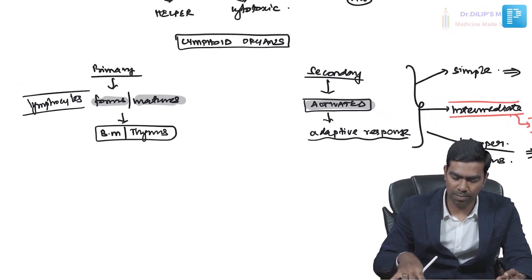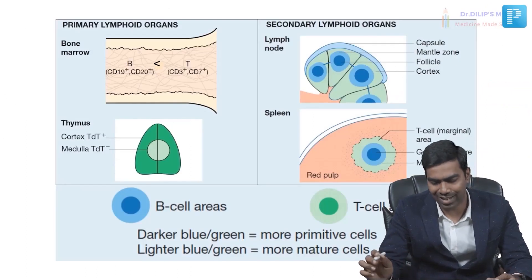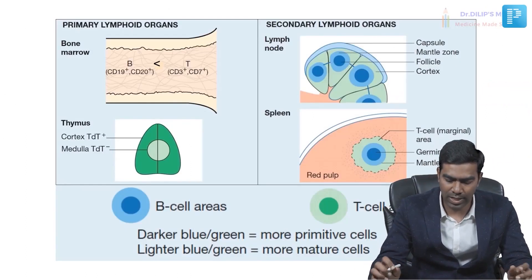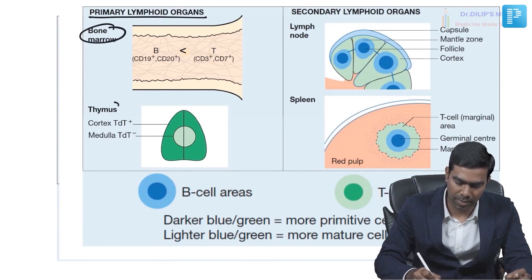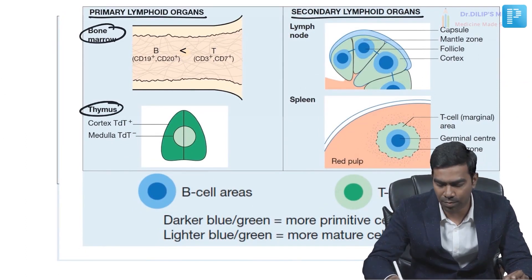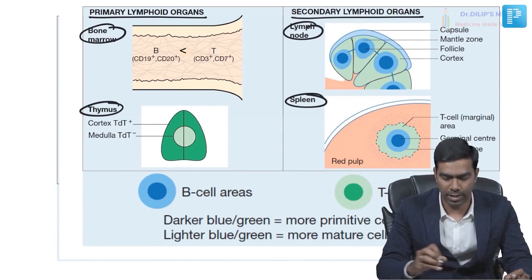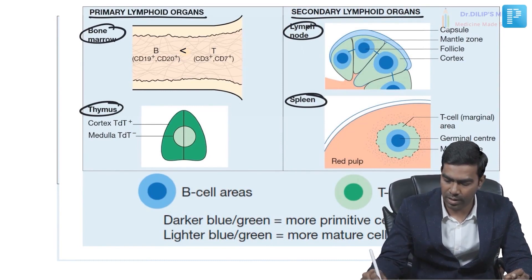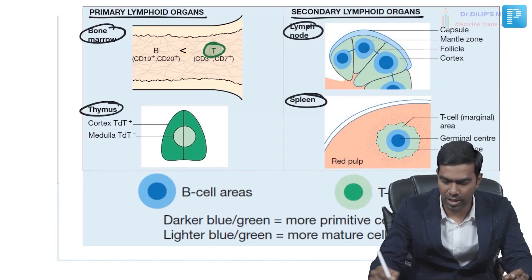Looking at the diagram, the primary lymphoid organs are the bone marrow and the thymus, and the predominant secondary ones are the lymph node and the spleen. Notably, T cells always outnumber B cells even in the bone marrow, because peripheral blood T cells are greater in number than B cells.